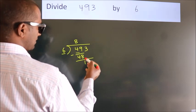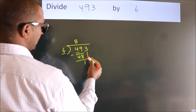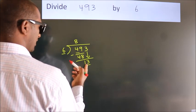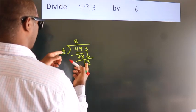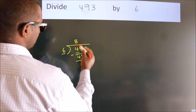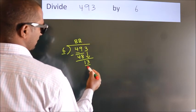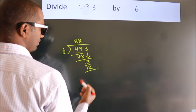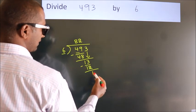After this, bring down the beside number. So 3 down. So 13. A number close to 13 in the 6 table is 6 times 2, 12. Now we subtract. We get 1.